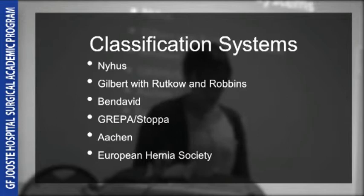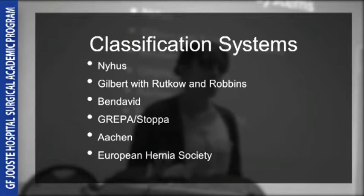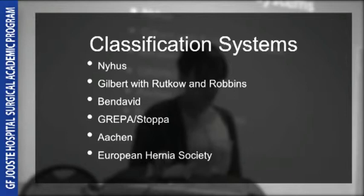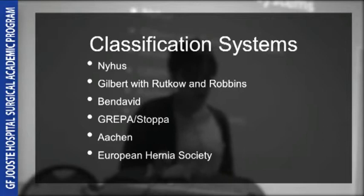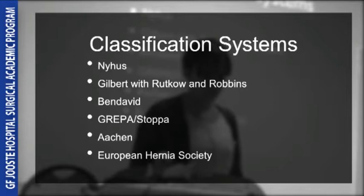The Ben David classification is used at the Shouldice clinic and is fairly complicated. Each hernia is given a TSD score: T stands for type referring to anatomic location, S refers to the sac and how large it is and where it is, and D refers to the diameter of the defect. The Grepa, the EHS, and the European Hernia Society also have good classification scores, but they are all essentially modifications of each other.